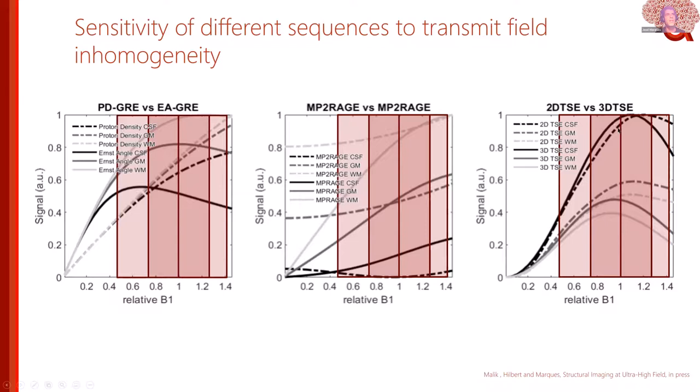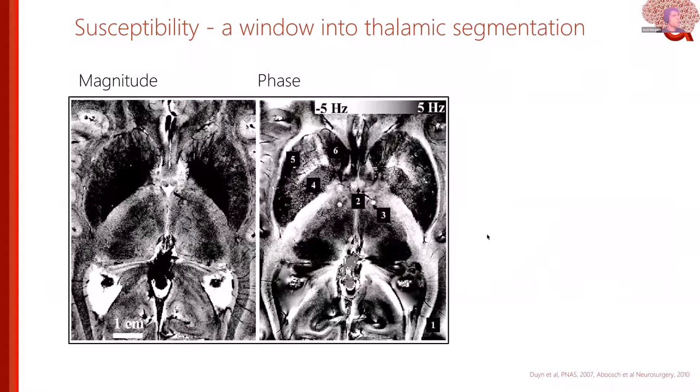The situation gets really bad for turbo spin echo sequences — 2D TSE or 3D TSE. They show a very large intensity variation that is not linear like in gradient echo but actually has a quadratic shape. In some cases you can have signal increases because of higher B1+, or even signal decreases, and we'll see the impact this has on thalamic imaging.